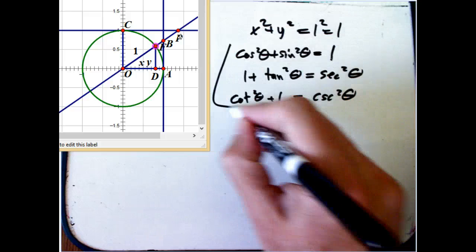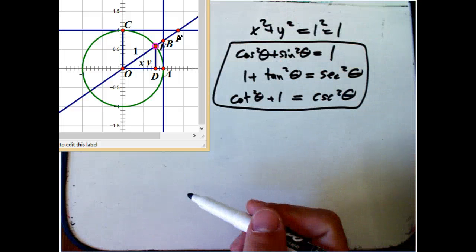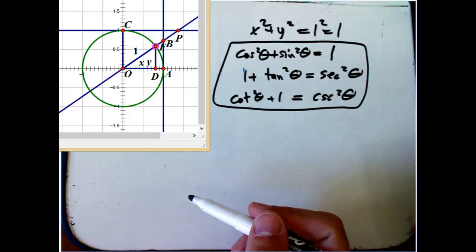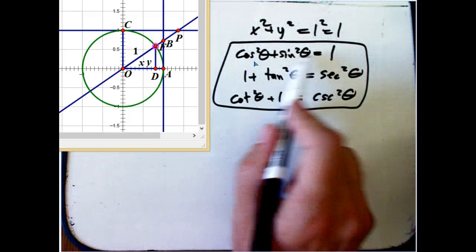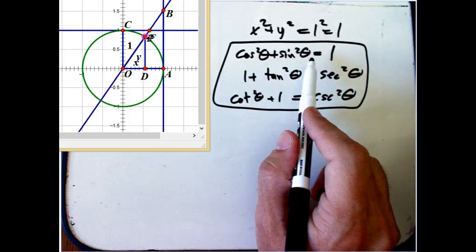Okay. These are all coming from Pythagoras, and these three different triangles are called the Pythagorean identities. So why would we care about these? Well, this one is absolutely, utterly crucial